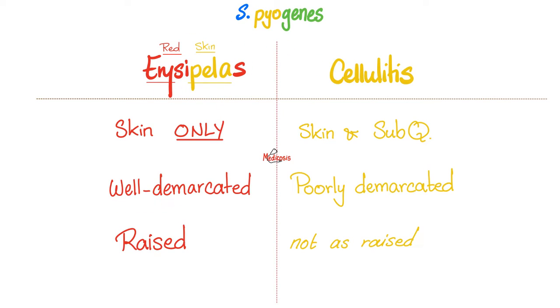Erysipelas is well demarcated, whereas cellulitis is poorly demarcated. Erysipelas is usually raised, but cellulitis is not, relatively speaking.